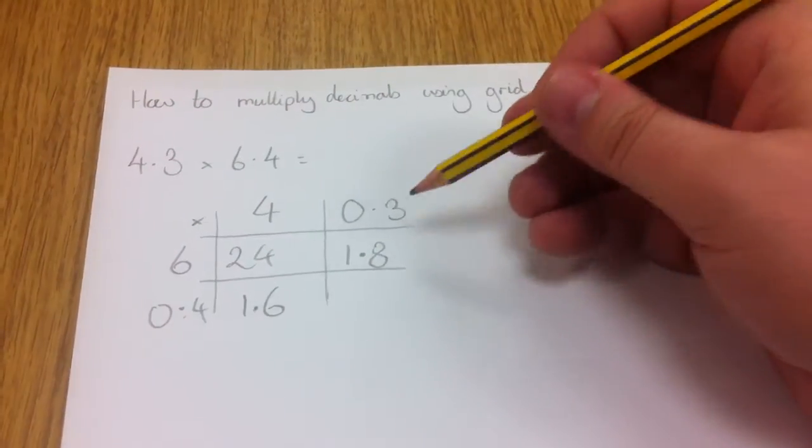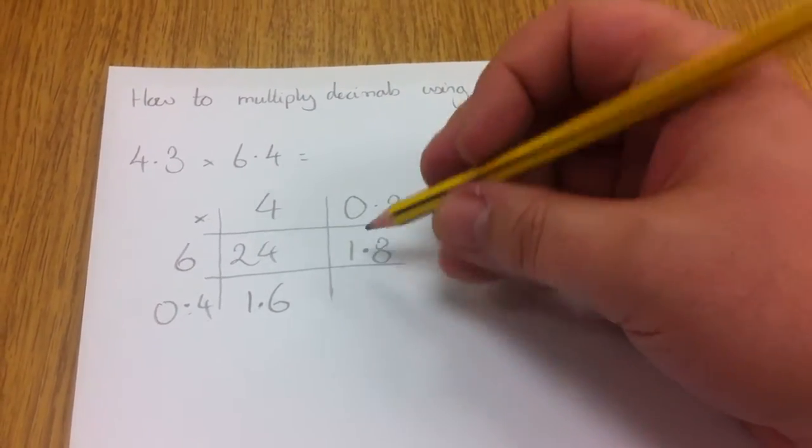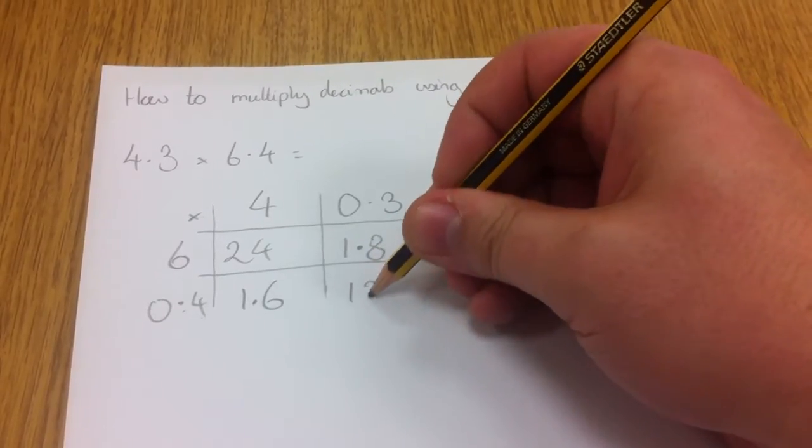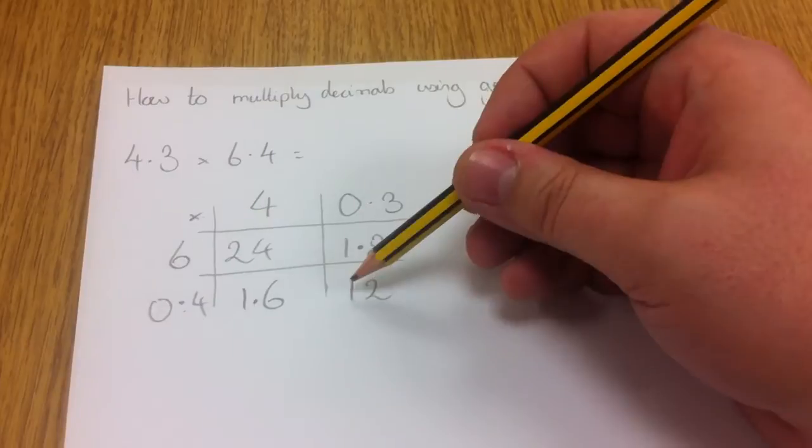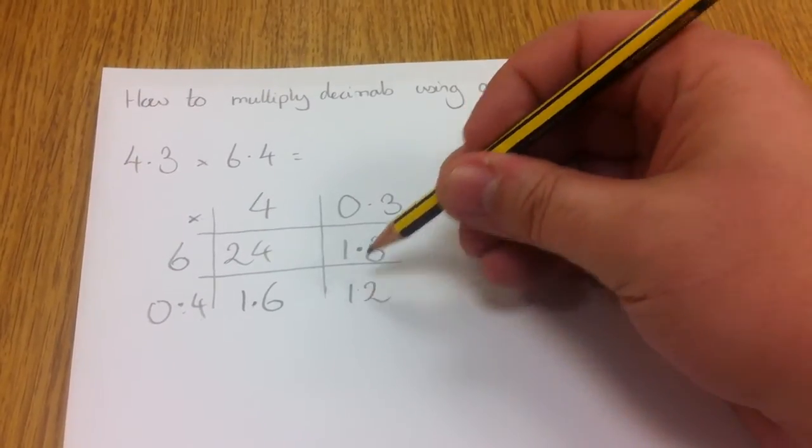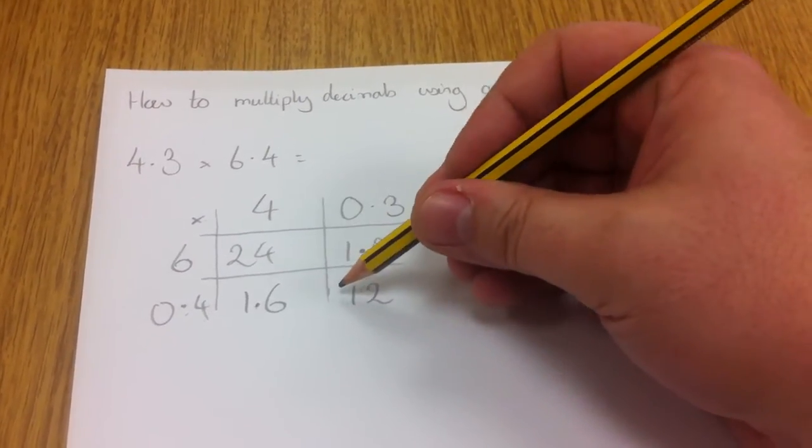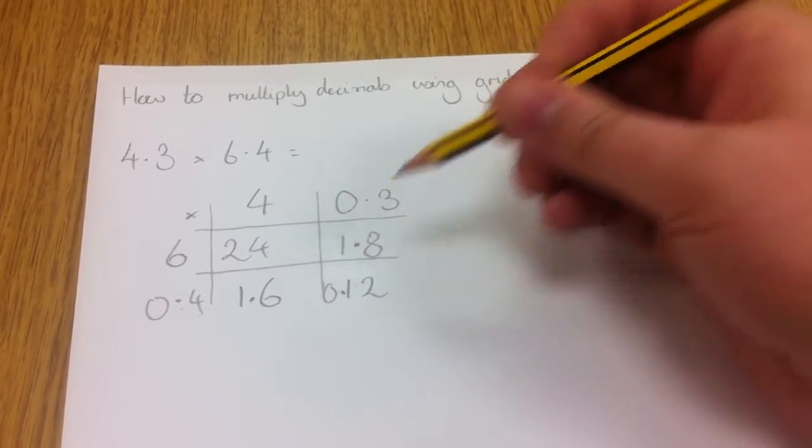This one's a little tricky. I've got 0.4 times 0.3. Now I know that 4 times 3 is 12. So 0.4 times 3 would be 1.2. So 0.3 times 0.4 is 0.12.